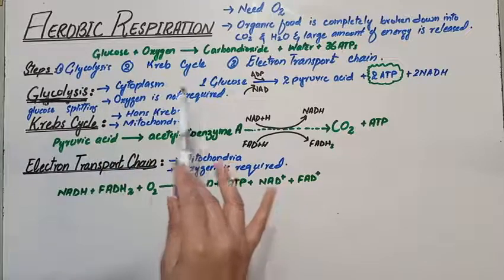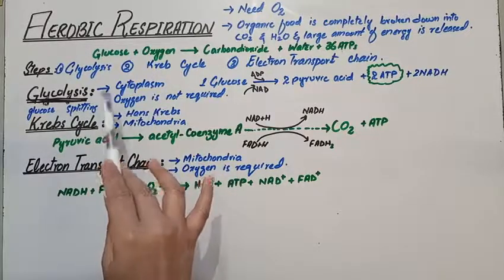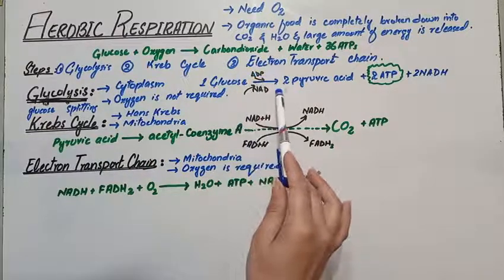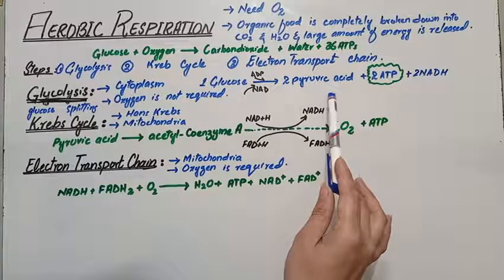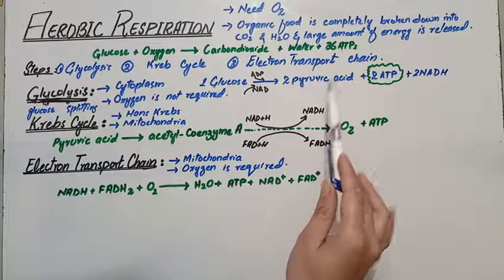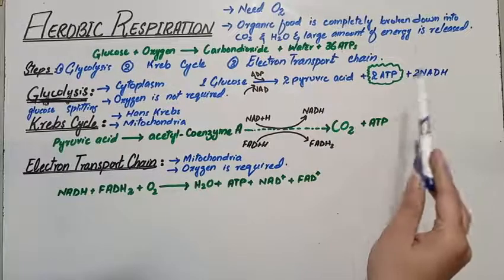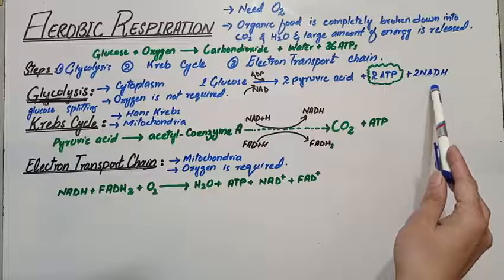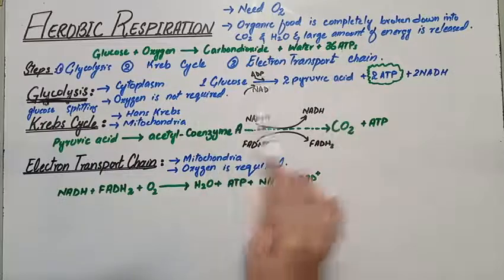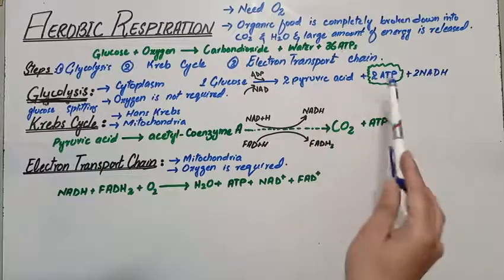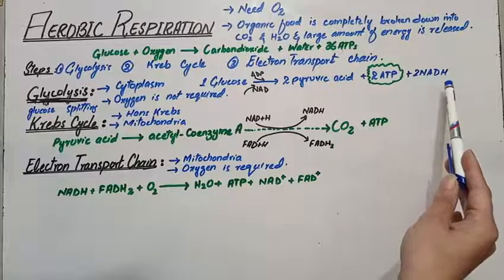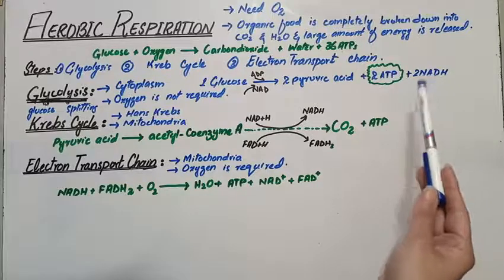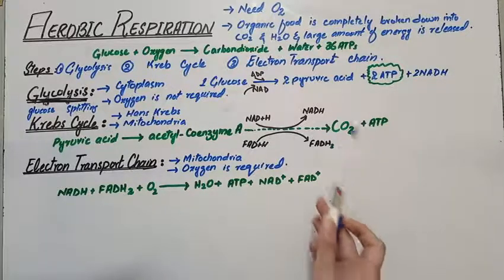Since oxygen is not required in glycolysis, one molecule of glucose inside the cytoplasm is broken down into two molecules of pyruvic acid, which is a three-carbon compound. There is a net gain of two ATP molecules and two NADH molecules are also formed at the end of this process. So the products are: two molecules of pyruvic acid, net gain of two ATP molecules, and two NADH molecules.